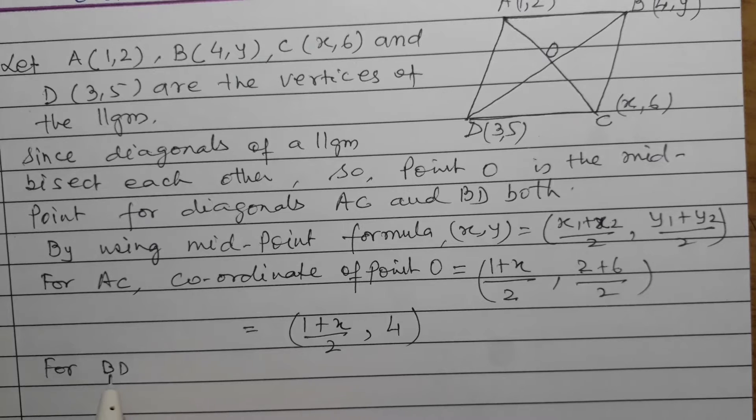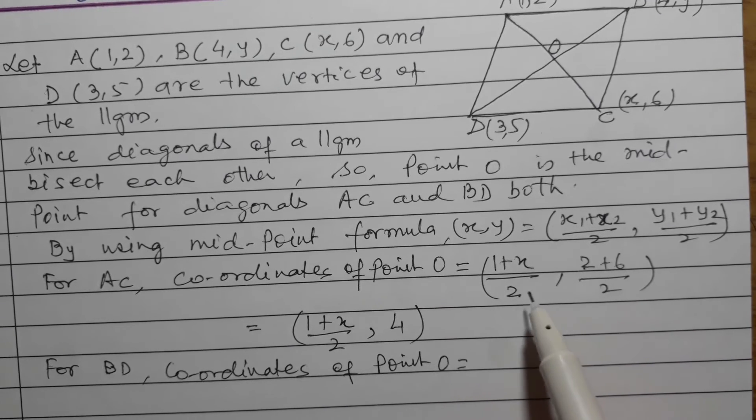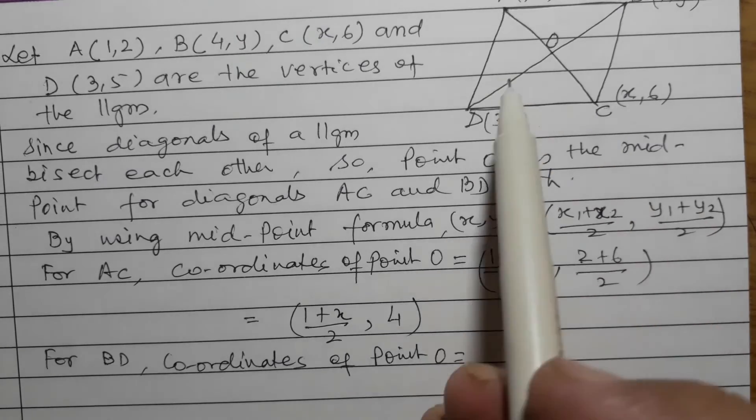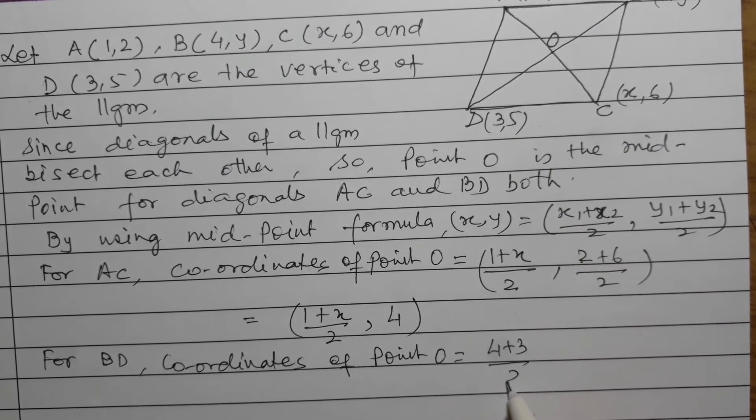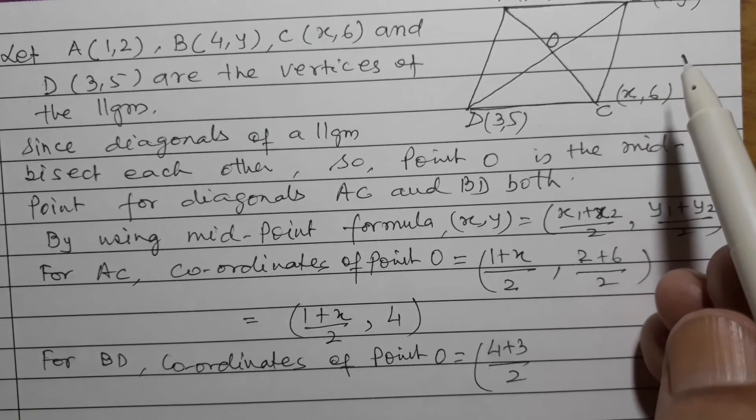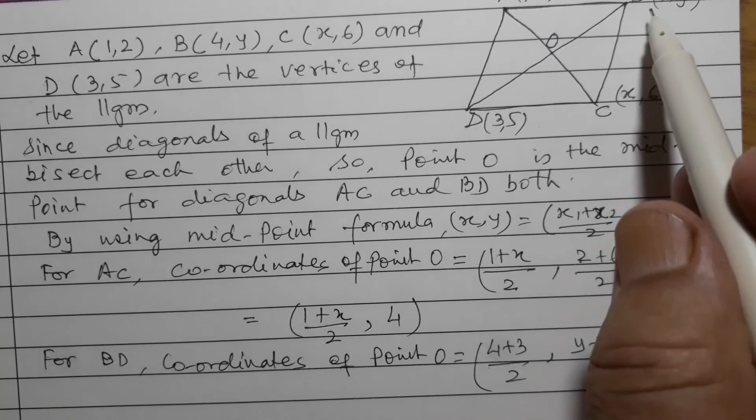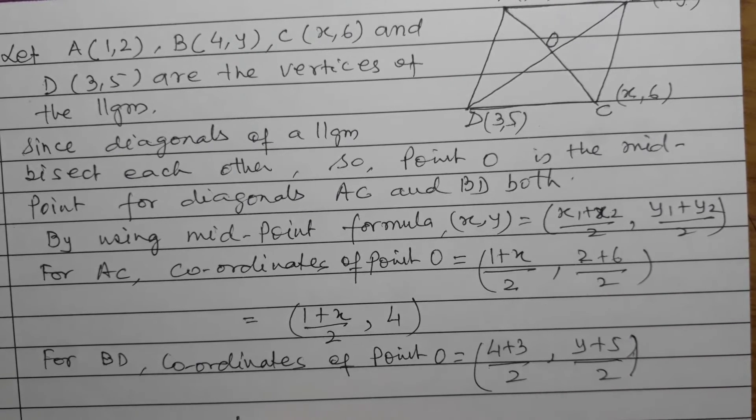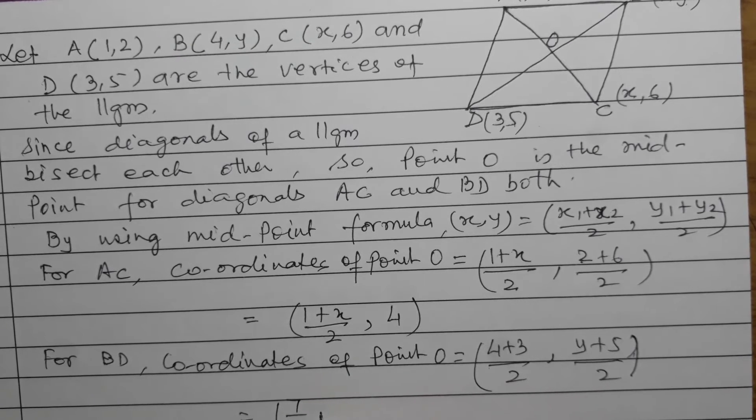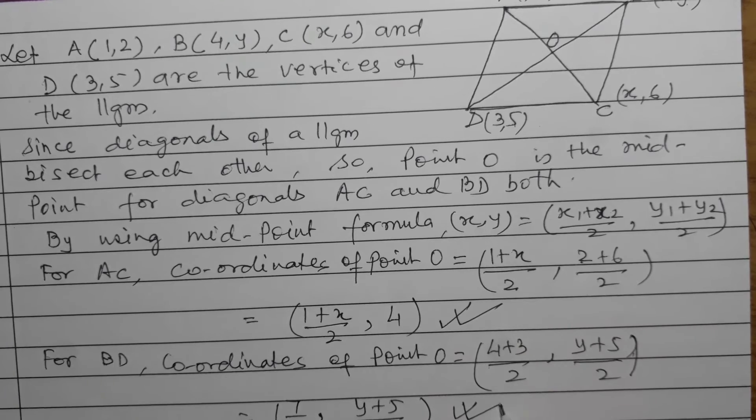For BD, coordinates of point O: For this also we have x1+x2. For BD, x1 is 4 from B and 3 from D, so (4+3)/2. For y it becomes (y+5)/2 - y1 is y and y2 is 5. Taking this forward, this becomes 7/2, and the second one is (y+5)/2.